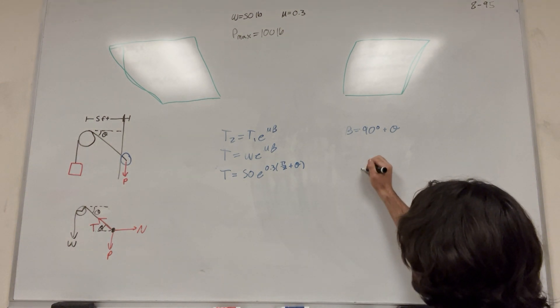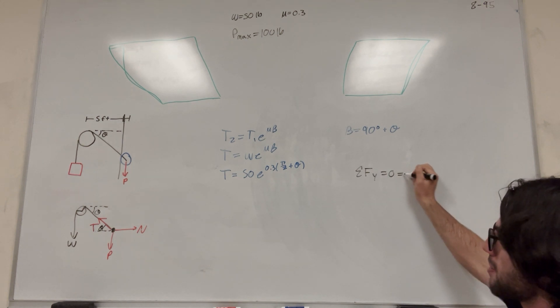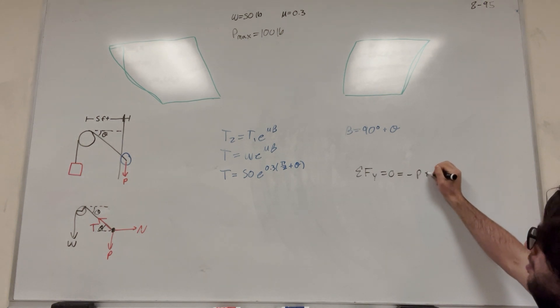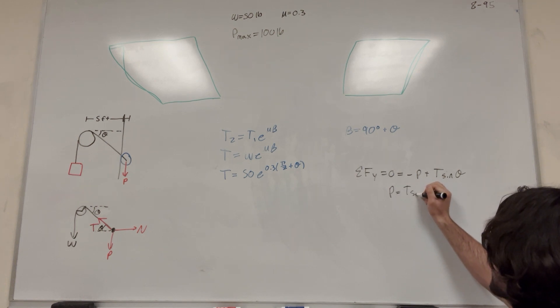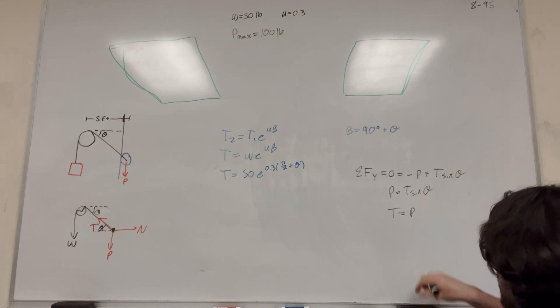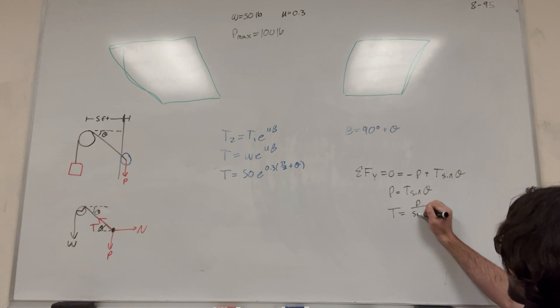So let's do sum of the forces in the y direction. We know it's equal to zero because we're at equilibrium, so it's minus P plus tension sine of theta. So now if we move one of these over, you're going to get P is equal to tension sine of theta. Divide by sine of theta, you're going to get tension is equal to P divided by sine of theta.